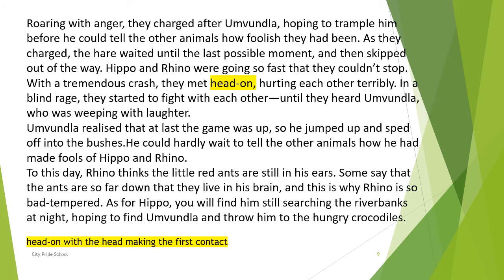Umundla realized that at last the game was up, so he jumped up and sped off into the bushes. He knew it was all over — both animals had done their part. Looking at the situation, he just ran away into the bushes. He could hardly wait to tell the other animals how he had made fools of Hippo and Rhino. He rushed off happily to spread the word.